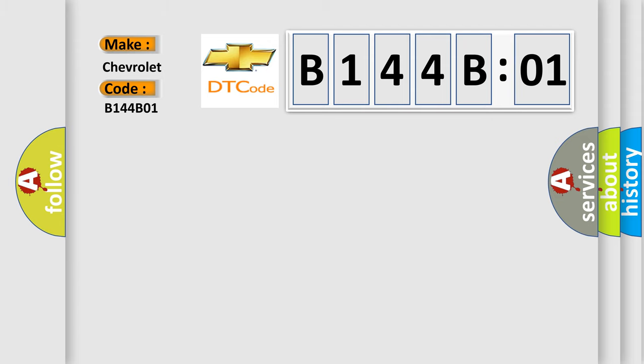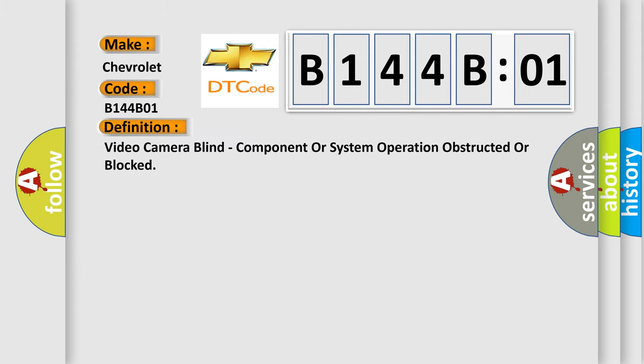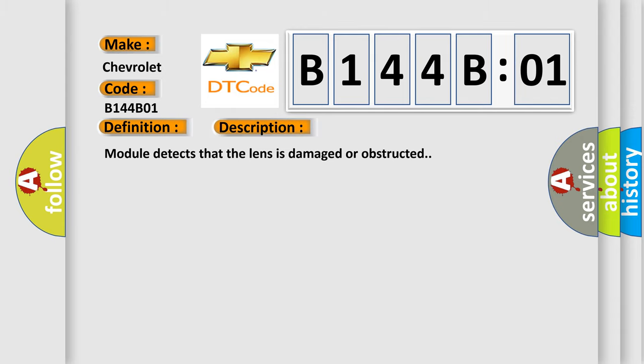The basic definition is Video camera blind, component or system operation obstructed or blocked. And now this is a short description of this DTC code. Module detects that the lens is damaged or obstructed. This diagnostic error occurs most often in these cases.